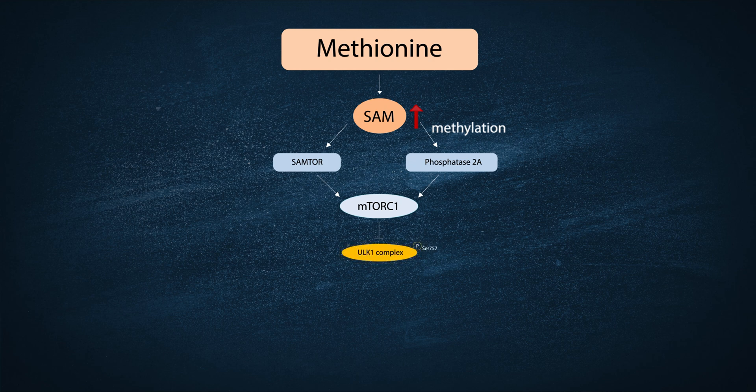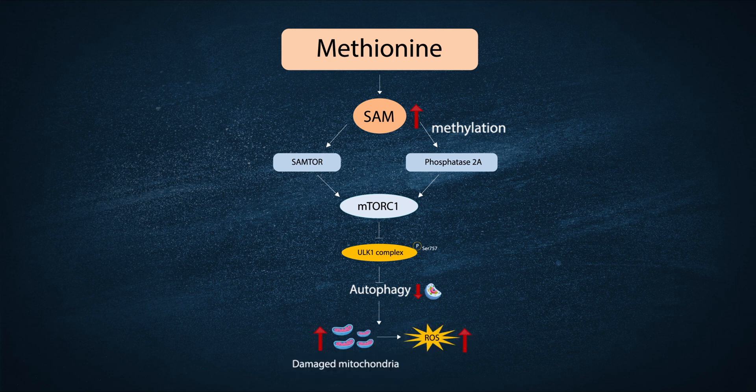SAMTOR and Phosphatase-2A act as nutrient signals for mTOR. They communicate that there is an abundance of nutrients, specifically amino acids like methionine in the body, and inform mTOR that it should instruct the cell to grow and proliferate.